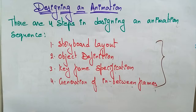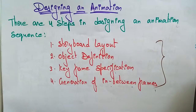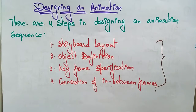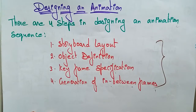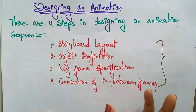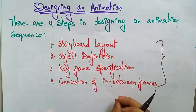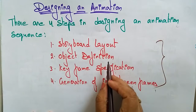To design any animation, you require these four steps. First is the storyboard layout — suppose you want to start any movie or animation, you need a storyboard first: what you are going to do, written out as pictures. It's just a rough diagram. After storyboard layout comes object definitions — what objects you need to include in the animation.